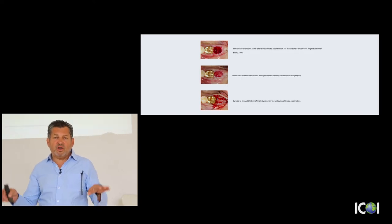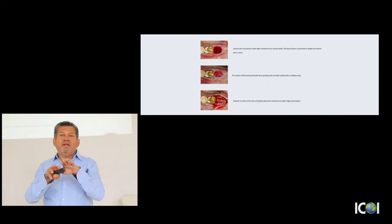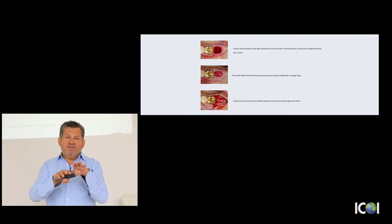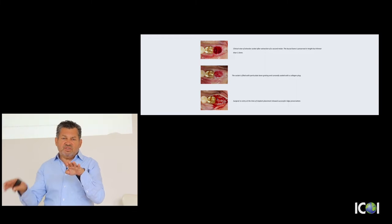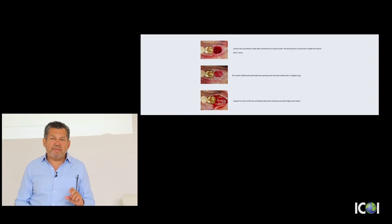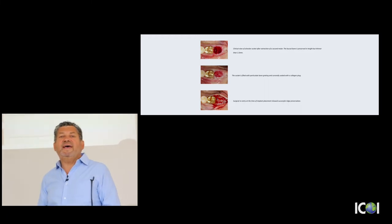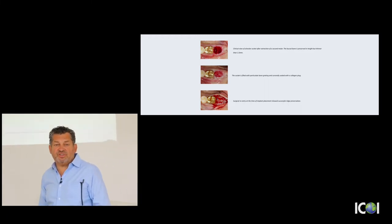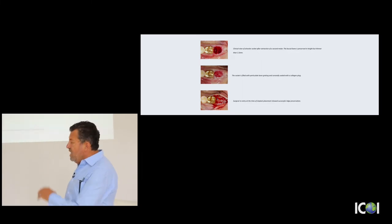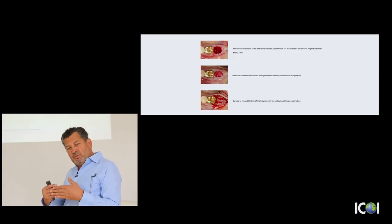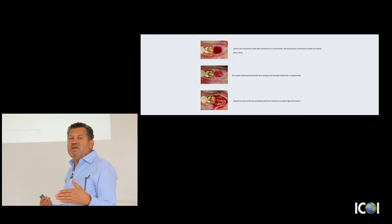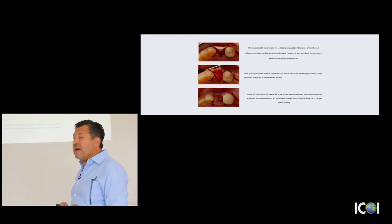If we aim for primary closure in the posterior mandible, we are moving the soft tissue toward the lingual; in the maxilla, toward the palate. This means the vestibular depth becomes shallower, creating a lot of discomfort for the patient and likely requiring future soft tissue surgery. That's why we distance ourselves from what was published in the literature in the past.